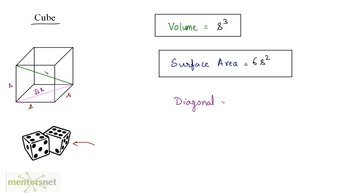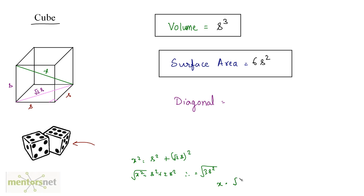Now we can calculate the length of the green diagonal line. Let it be x. Then x² = s² + (√2 · s)², so x² = s² + 2s², which equals 3s². Taking the square root of both sides gives x = √3 · s. So the length of the diagonal of a cube is √3 times s, where s is the length of the side of the cube.